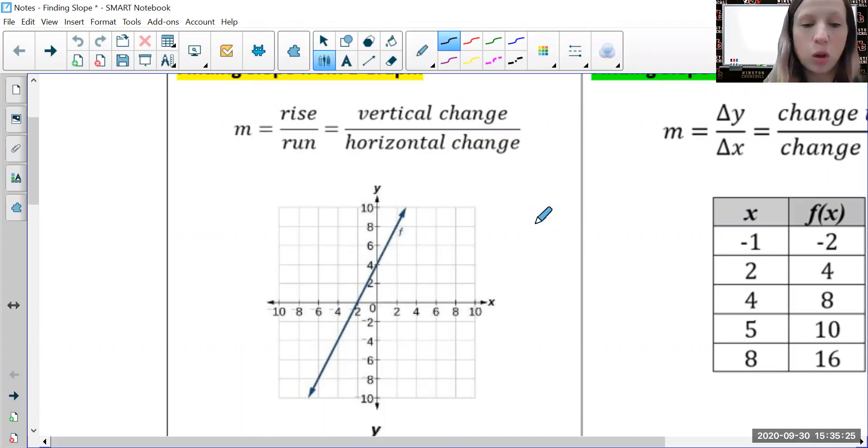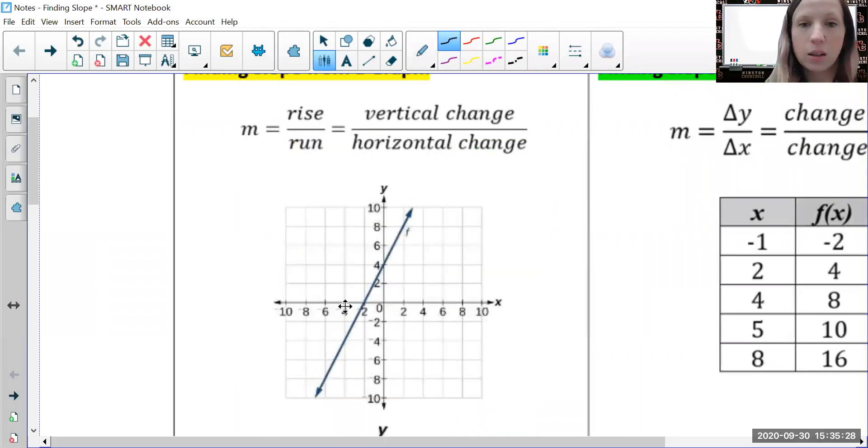We need to find two points. We start with the point on the left and find our rise - in this case it's a rise of four - and our run which is two. Each box counts as two, so our rise is four and our run is two. Now we divide them: four divided by two is two. So our slope m equals two.